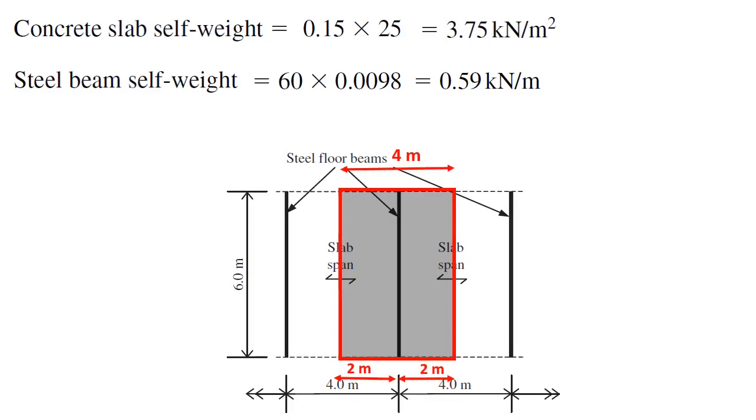Load of this shaded area is borne by the middle beam. Width of the shaded area is 4 meters. Length of shaded area is 6 meters, so the area of shaded area is 6 meters times 4 meters.